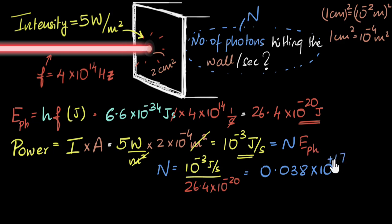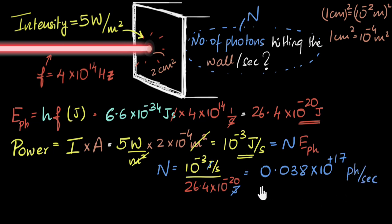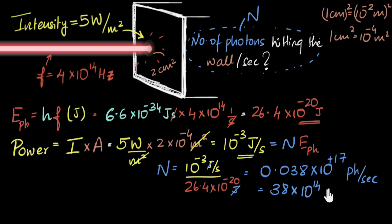Plus 20 minus three is plus 17. Joules cancels out, leaving per second. We can convert 0.038 to 3.8 by borrowing three powers of ten, so 17 minus 3 equals 14 — giving 3.8 times 10 to the power 14 photons per second. That many photons are hitting the wall per second.